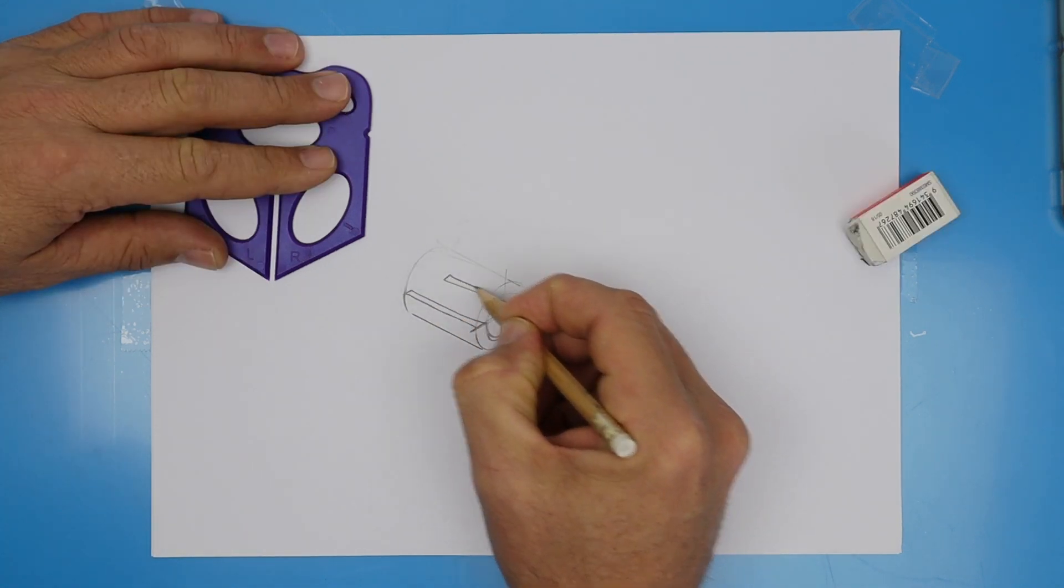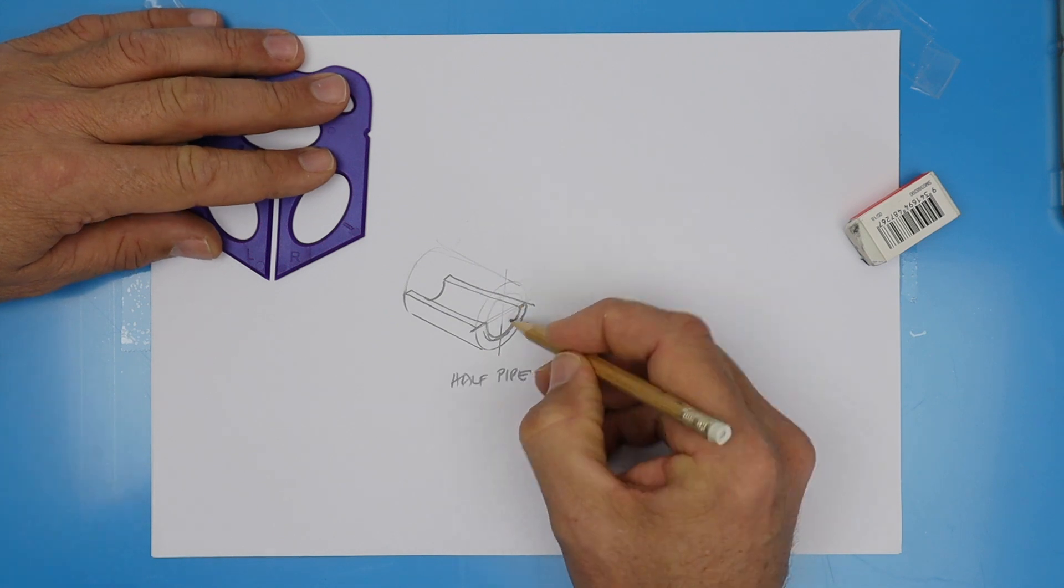So that top piece I'll erase, and then draw what I'd see. Now I've got a halfpipe.